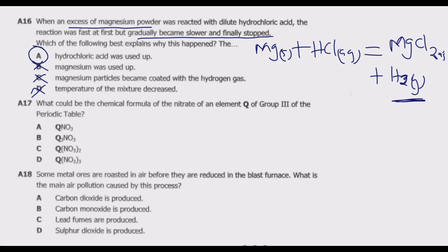The reaction releases hydrogen gas and produces a salt, magnesium chloride. Because hydrogen is a gas, it is not likely to coat the magnesium particles — it cannot be collected on the surface.